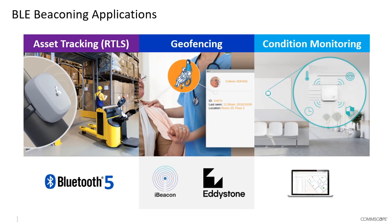BLE can also be used for condition monitoring. By utilizing small sensors — temperature, humidity, CO2, vibration, tilt, or even a panic button — we can gather information on a tag and use the BLE radio to transmit it through the network to a back-end service. Similar to Zigbee, BLE can store data on the tag over a long period of time and then do a very quick data upload when needed.